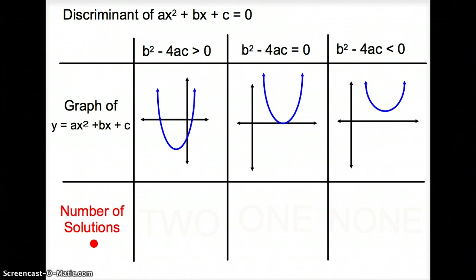Let's go ahead and look at some graphs. All these are the discriminants of ax² plus bx plus c, just the general form of a quadratic equation. If the discriminant is greater than zero, the graph will look something like this. How many roots do you have? How many solutions do you have? You have two. So we should have two solutions.